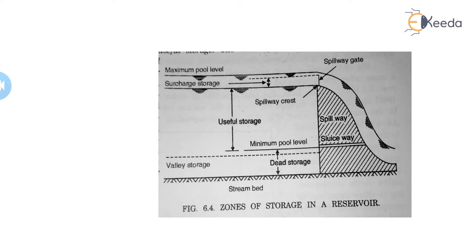There is also a minimum pool level — the lowest elevation to which water in the reservoir is drawn under ordinary operating conditions. The normal pool level is the water level available under ordinary conditions; when it rises during a flood situation it becomes the maximum pool level; and when it is lowered because of water extraction under ordinary operating conditions, that level is called the minimum pool level.